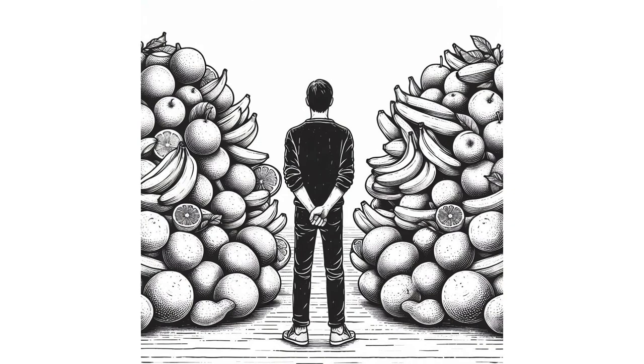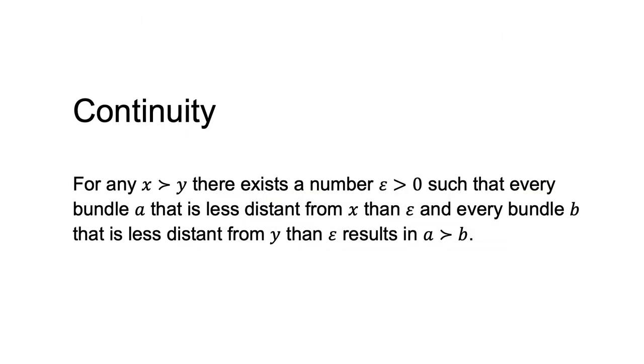Continuity guarantees that every preference relation can be represented by a continuous utility function, and vice versa. Here are two formal definitions.